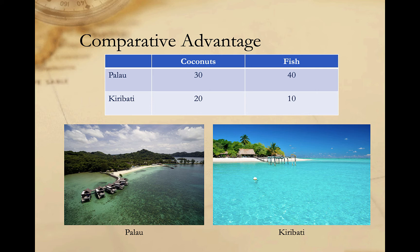Let's take this hypothetical example of two small island states in the South Pacific: Palau and Kiribati. This chart represents how many coconuts and how many fish can be produced by each island in a day if they dedicate all of their labor to that good. Palau has absolute advantage in coconut production — 30 coconuts per day compared to only 20 in Kiribati. And in fish production, Palau can produce 40 fish to Kiribati's 10. So Palau is better at producing both fish and coconuts in absolute terms, but can they still benefit from specialization and trade? The answer is yes, because of comparative advantage.